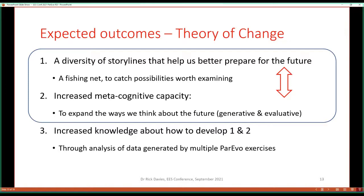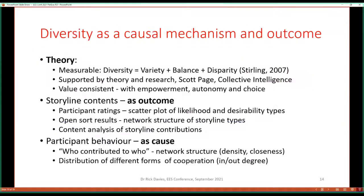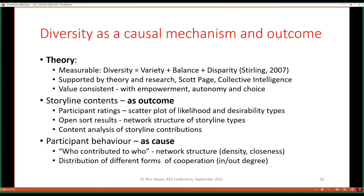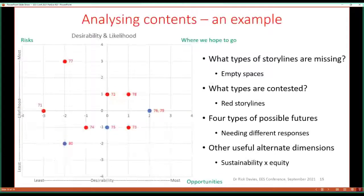The theory of change is basically that having a diversity of storylines will help us better prepare for the future. We're not talking about forecasting or making specific predictions, but developing a range of storylines that might help us think about the future. Through the process of evaluation, we're also trying to increase people's meta-cognitive capacity to think about how they're thinking about the future. Because of time, I'll skip the diversity section and focus on two examples of analysis of results.